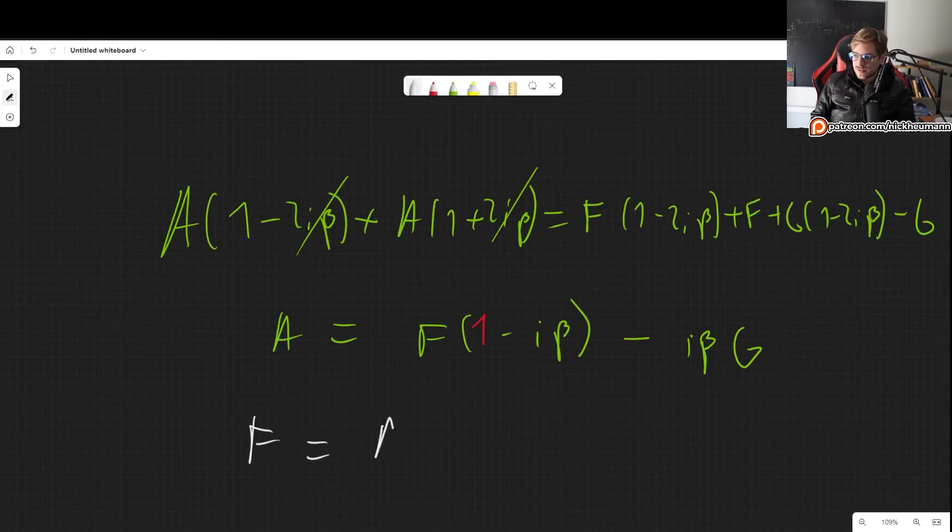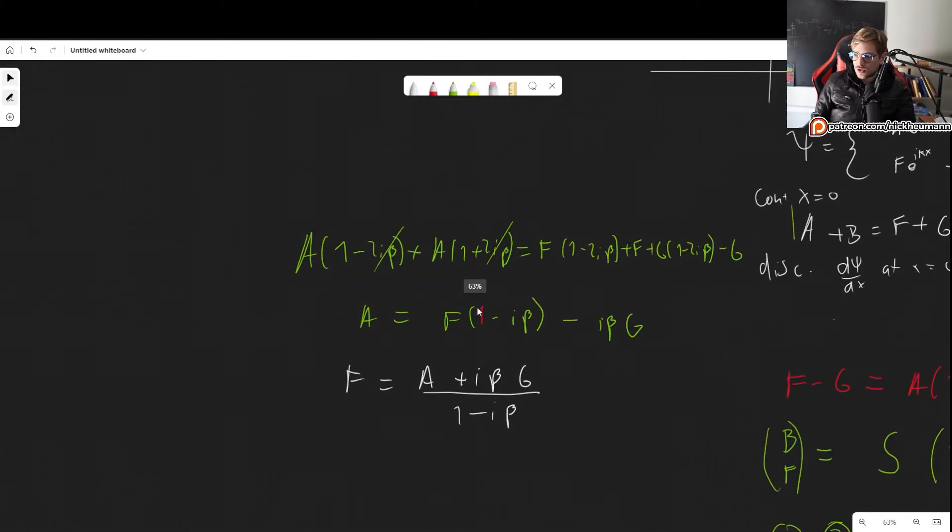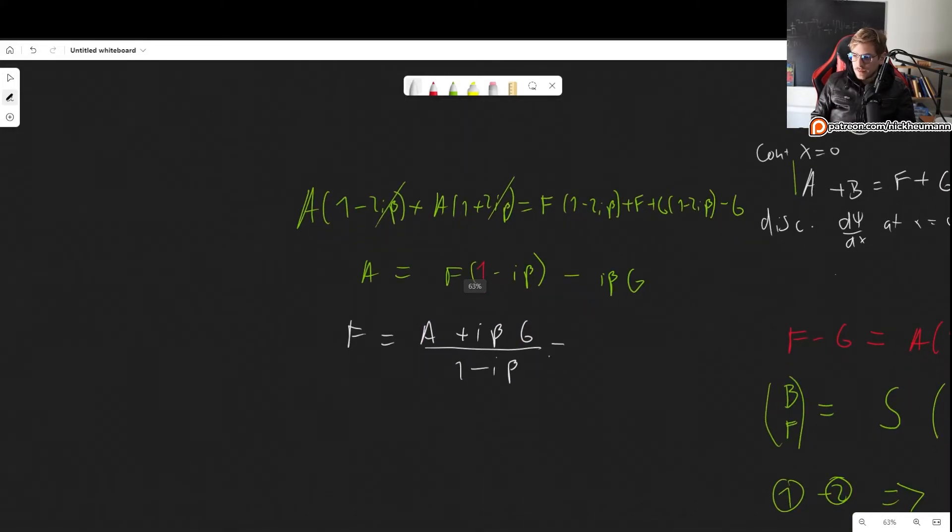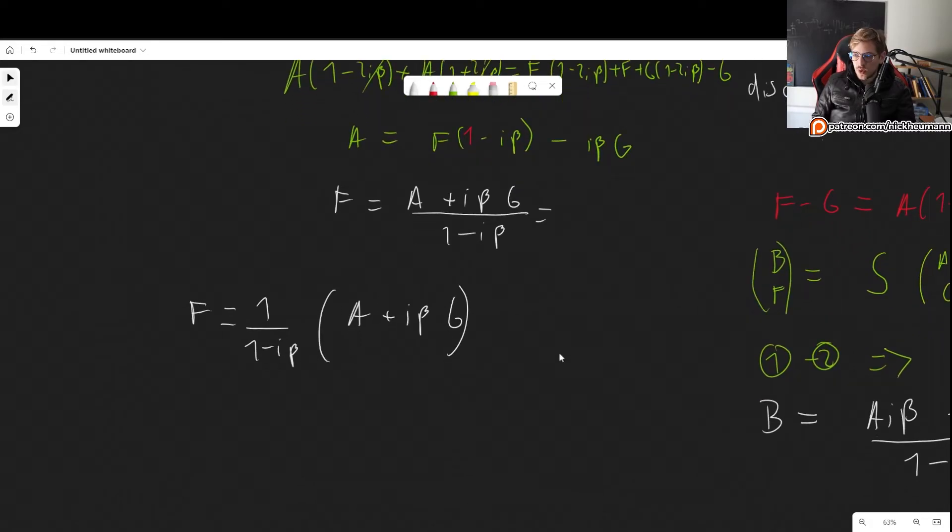And then we have F(1 - 2iβ) + F, and then we have +G(1 - 2iβ) - G. So there we are. So we can now simplify this a little bit. So this and this cancel out, so we get 2A = F(2 - 2iβ) and then that part of G cancels out, so we get -2iβG. So once again we can divide by 2. And now we can isolate F. So we get F = (A + iβG)/(1 - iβ). Or just to make this even more clear, I'm going to do it like this. Actually, F = 1/(1 - iβ) times (A + iβG). So here we have S₂₁ which is 1/(1 - iβ), and S₂₂ is iβ/(1 - iβ).